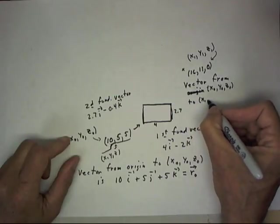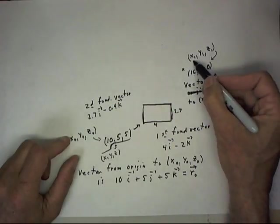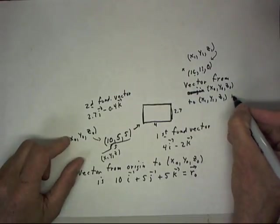To the point that we're going to call x one, y one, z one, and we've labeled this x one, y one, z one, sixteen, eleven, zero, is what?